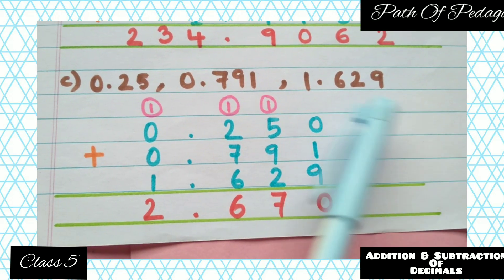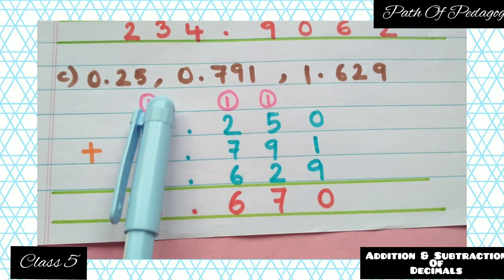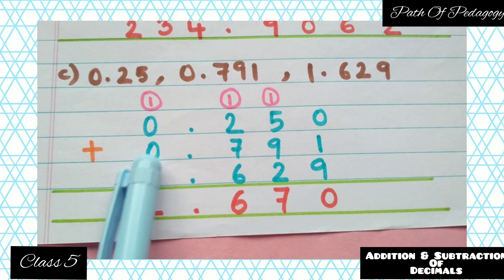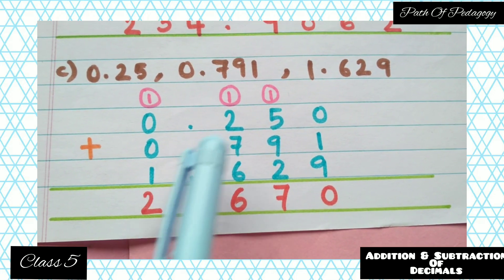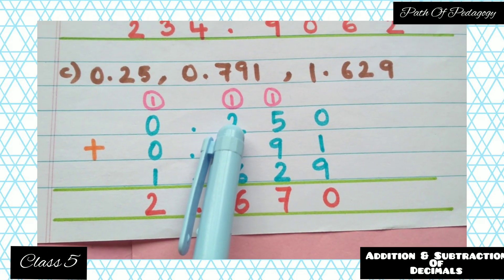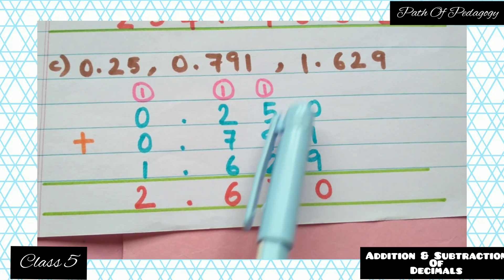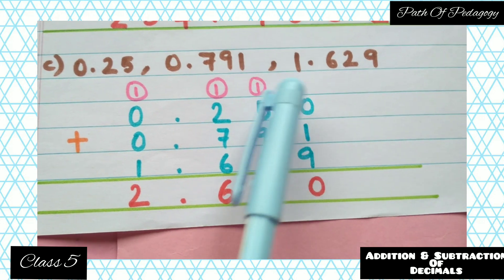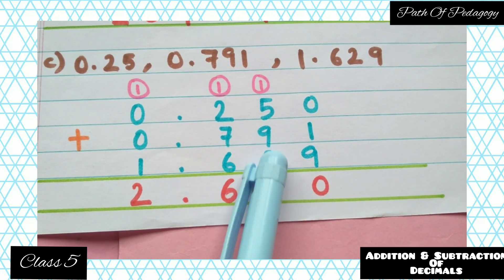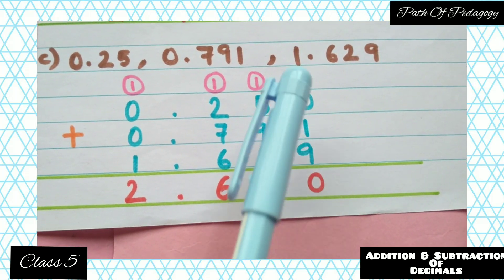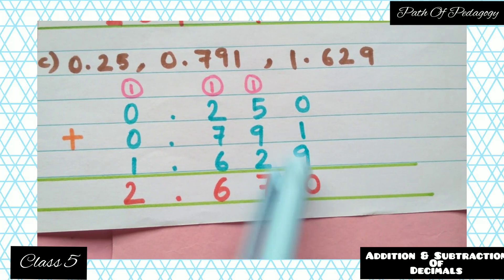First is 0.25 — write it down. Then 0.791 — write it down. This decimal has three numbers after the decimal point, but 0.25 has only two, so you have to add one zero to the extreme right of 0.25. Next is 1.629 — write it down.